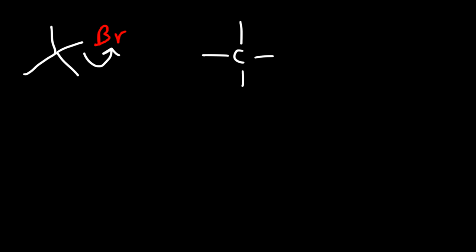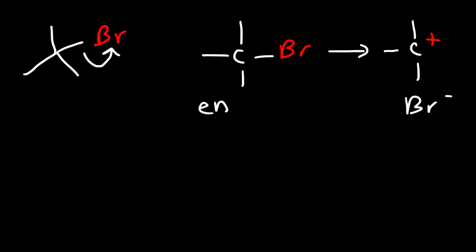Now let's begin our discussion with the SN1 reaction. Let's say we have tert-butyl bromide. The first thing that has to happen in the SN1 reaction is that the leaving group has to leave — the carbon-bromine bond has to break. Any time you break a bond, you need to put in energy; it's an endothermic process. Whereas forming a bond is exothermic — energy is released. So the ionization in the first step of an SN1 reaction is endothermic, and the solvent helps in breaking this bond and ionizing this alkyl halide.